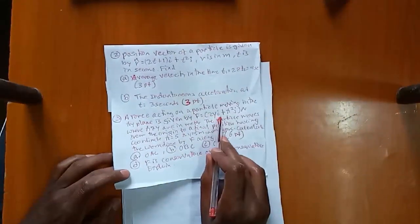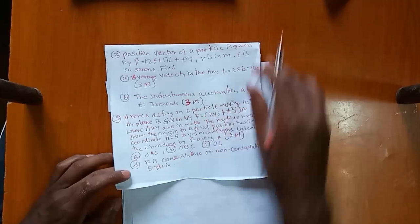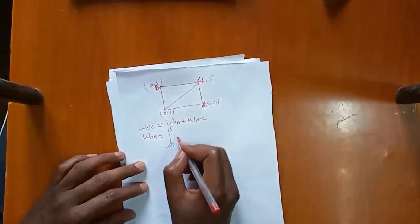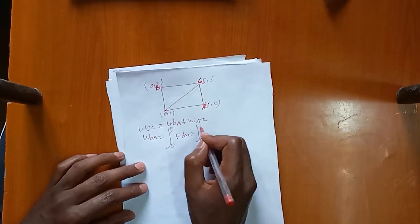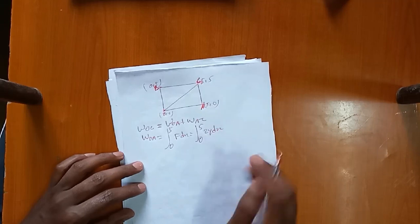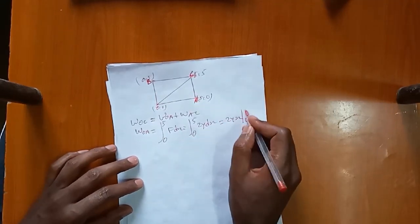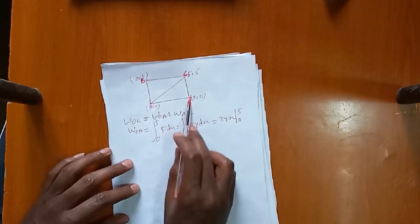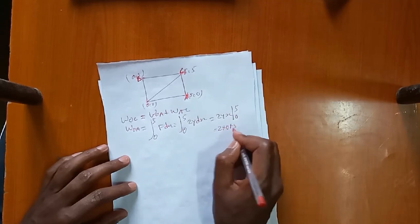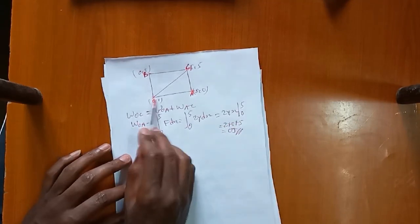F equals 2y·i plus x²·j. In the x-direction, the component is 2y. So along OA the work integral is: integral from 0 to 5 of 2y dx. On path OA, y equals 0, so the integrand becomes 2 times 0 times dx. Therefore work along OA equals 0 joules.